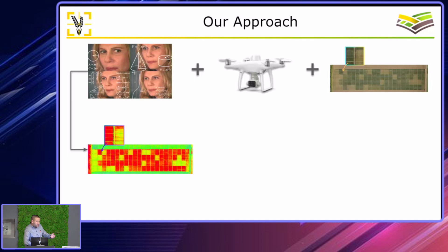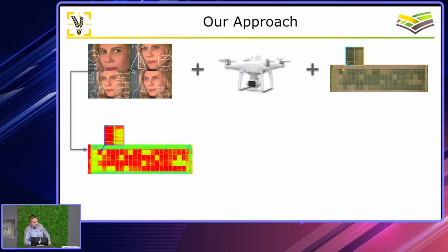Why are these indices important? When you can visually see that something is wrong with a plant — when it looks bad — it's already too late. But in the infrared and near-infrared spectrum, the plant already shows signs of stress. So we want to see what the problem is before it becomes visible to the naked eye.